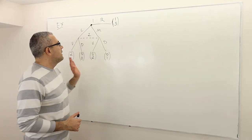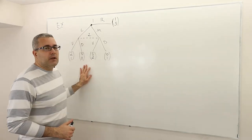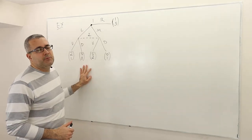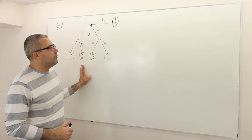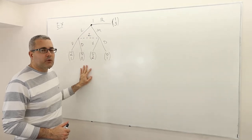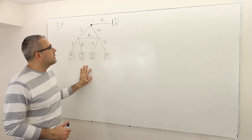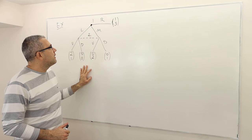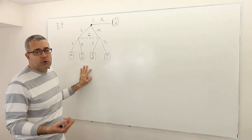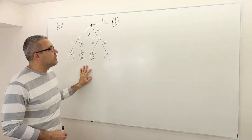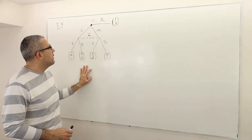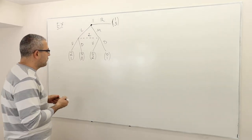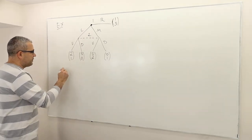Hi guys, so let's apply our new solution concept, perfect Bayesian equilibrium, in this game. But before we do this, let's find the Nash equilibrium of this game, or Bayesian Nash equilibrium of this game. Remember, we can write down the normal form representation.